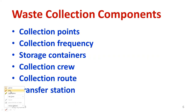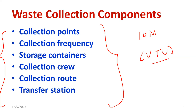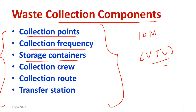One of the most important university questions — and you should have general knowledge on this — is: explain waste collection components, worth 10 marks. You can expect a similar kind of question in the examination. This is one of the most important topics. What are the waste collection components? We have the following: collection points, collection frequency, storage containers, collection crew, collection route, and transfer station. These are the major waste collection components, which we will discuss in greater detail.